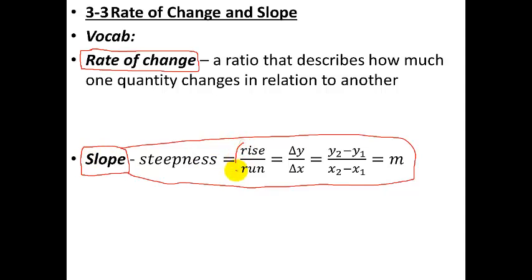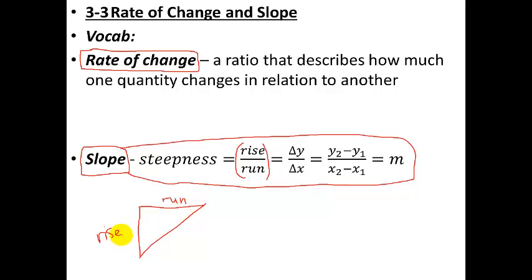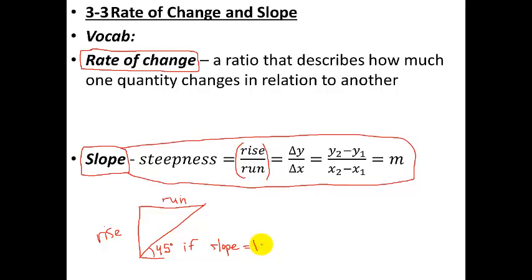An easy way to remember it mathematically is rise over run. If you have a line going uphill, how far up you go is your rise, and how far over you go is your run. If your rise is 1 and your run is 1, that's a slope of 1, which corresponds to a 45-degree angle. Anything steeper than 45 degrees has a slope larger than 1, and anything shallower has a slope less than 1.